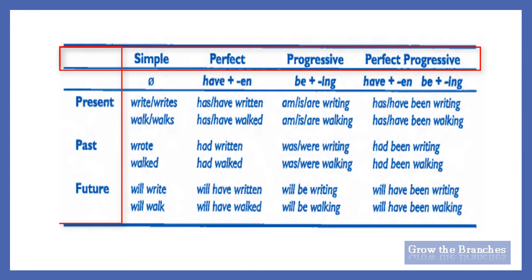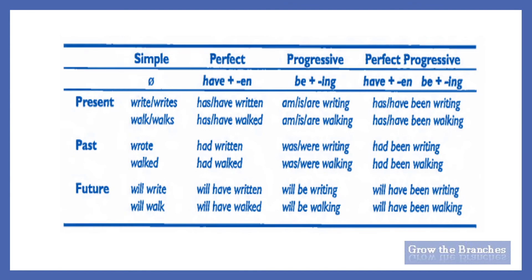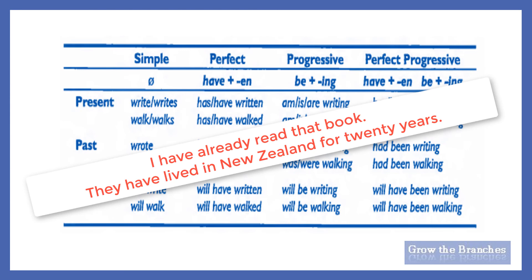The following table summarizes all the forms of the English tenses that we are going to see one by one in the coming videos of the tenses series. You can find a downloadable link of this table in the description box below. Returning to the first two sentences from the beginning of the video — 'I have already read that book' and 'I have lived in New Zealand for 20 years' — the use of the present perfect tense does not express the present time, but expresses an action starting in the past and finishing in another time, either in the present for the first sentence or in the future for the second sentence.